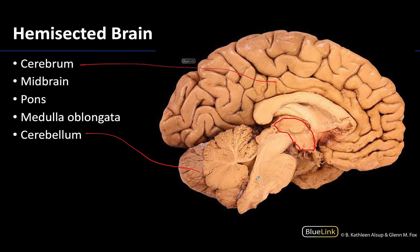With this hemisected brain you can really start seeing the brain stem in a little bit more detail. Specifically, we are able to see the midbrain, which is kind of this portion right here, and then you have the pons, and then lastly the medulla oblongata — the more caudally oriented structure. If we were to move more distally at that point we would be getting into the spinal cord, so if your foramen magnum is say right here, you have that transition from the medulla to the spinal cord.